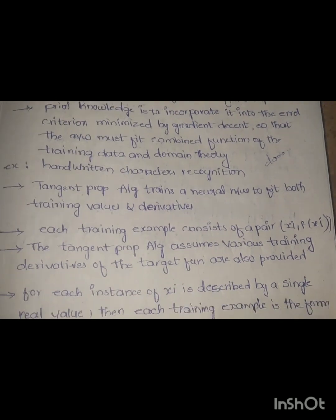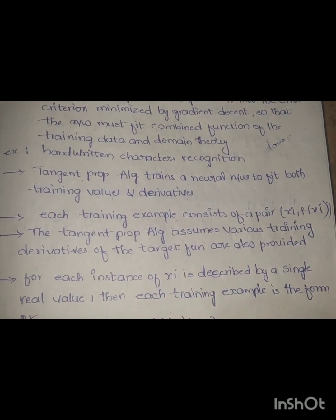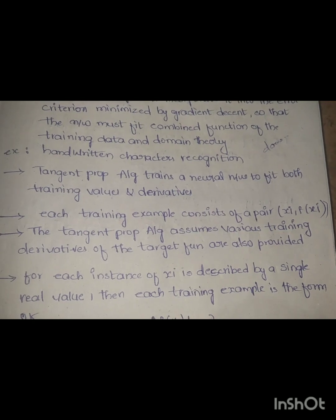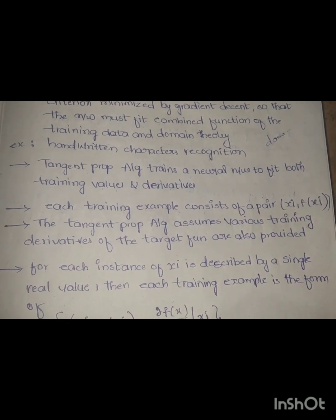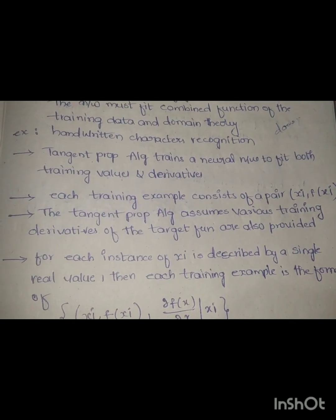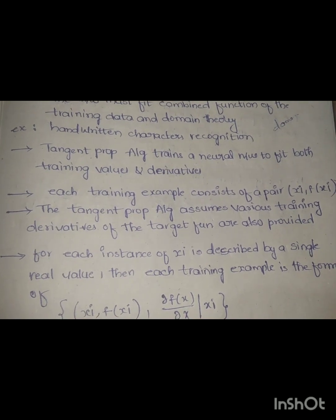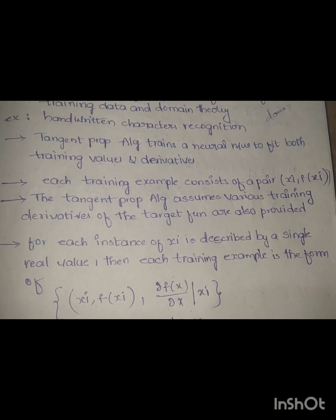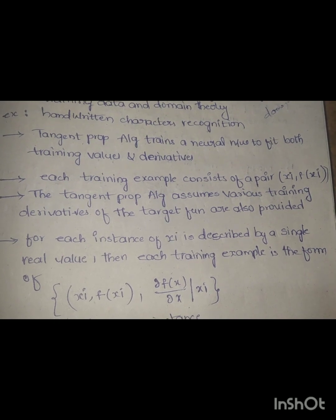Each training example consists of a pair of instances and training values. Instances are denoted as xi and training values as f of xi. The tangent prop algorithm assumes various training derivatives